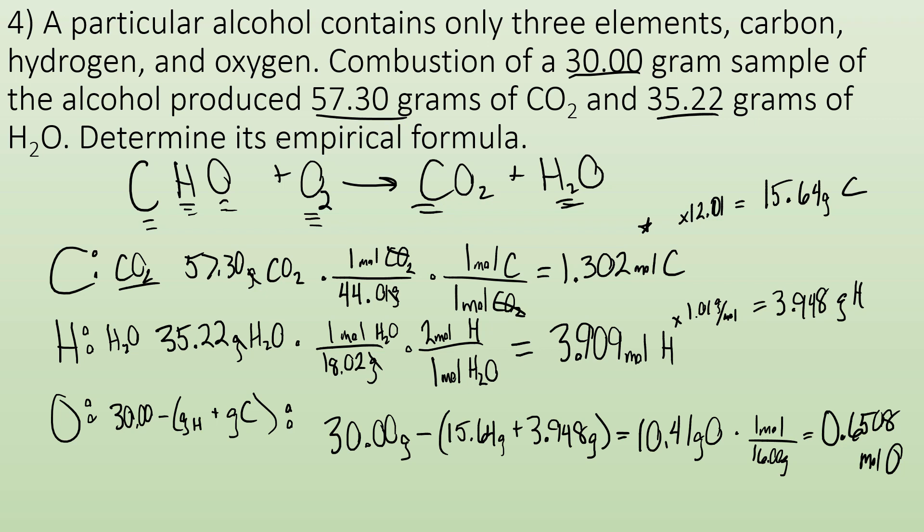We're not done yet, because it wants the empirical formula. That's what it's asking for. We now have moles of each element. So you've got to divide by the smallest number, which is going to be this 0.6508. When I do that many moles divided by 0.6508, I end up with two carbons, so C2. Hydrogen, that 3.909, divided by 0.6508, and I end up with six. So C2H6, and then oxygen divided by itself is just one. So final answer for this terribly long problem, C2H6O. Hope you found it helpful. Okay, bye.